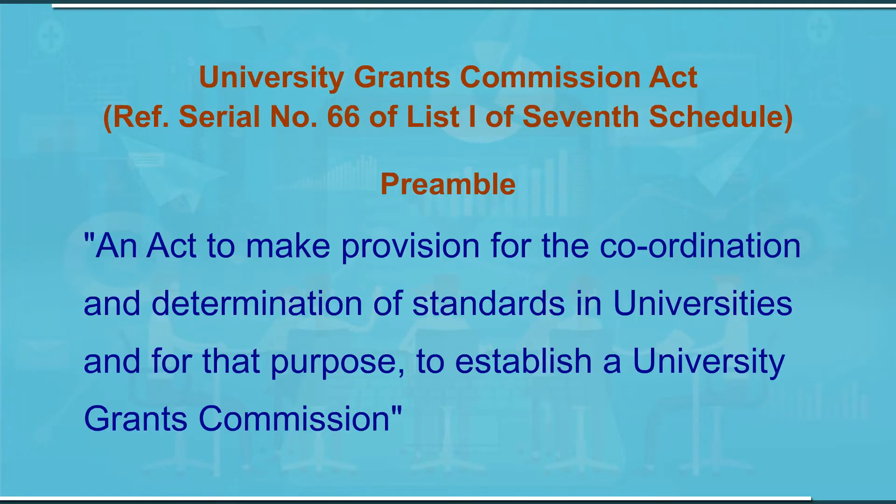UGC is the focus act for all of us. To recollect: serial number 66 of List 1 of the Seventh Schedule talks of coordination and determination of academic standards. The UGC act, when it was promulgated in 1956, the very preamble talks about this. One must understand that the preamble — the first opening sentences of any act — talks of the basic objective or intention for which this enactment has been made. The preamble of the UGC act says: an act to make provision for the coordination and determination of standards in universities and for that purpose to establish the University Grants Commission. So when UGC was established in 1956, it was for the coordination and determination of academic standards.